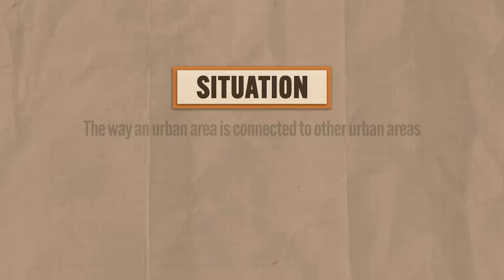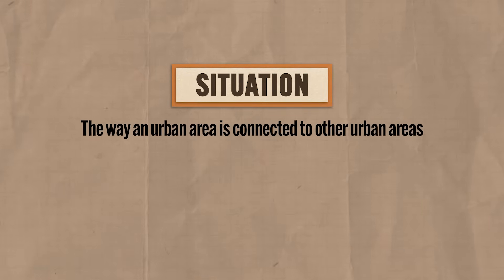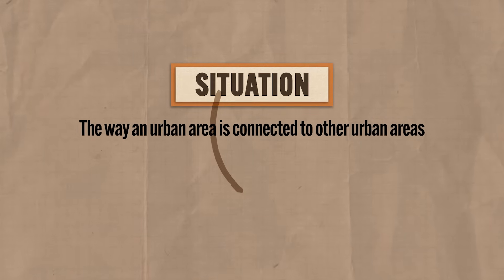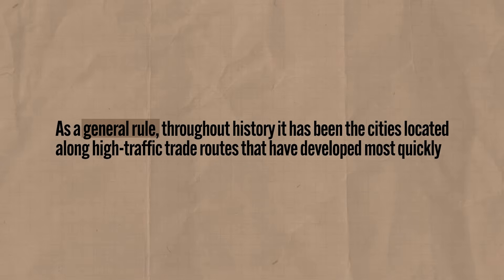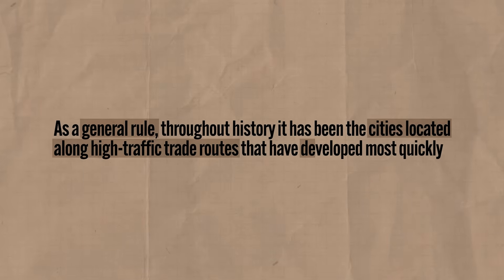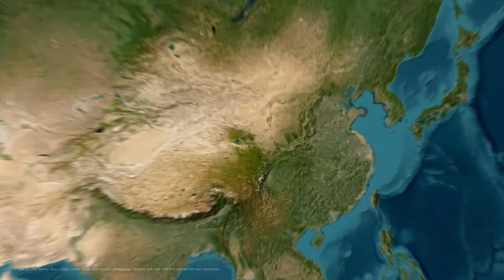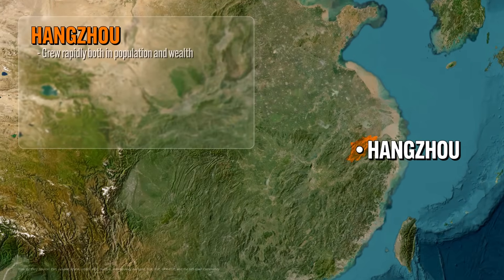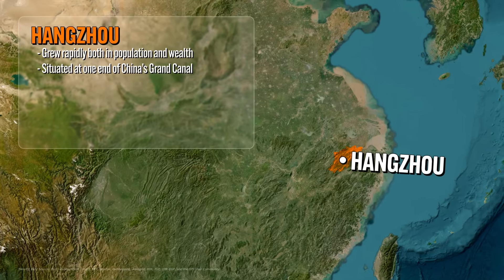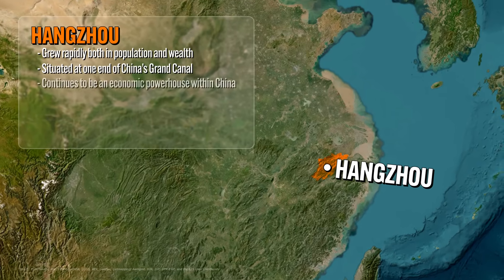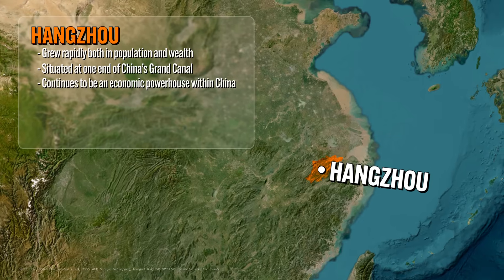Situation describes the way an urban area is connected to other urban areas — or reaching back to Unit 1, this is what we call relative location. A significant determining factor for the growth and longevity of any city is its relative location to other cities, especially through trade. Throughout history, cities located along high-traffic trade routes developed most quickly. For example, Hangzhou, China grew rapidly in population and wealth because it was situated at one end of China's Grand Canal, a major trading artery in that region, and continues to be an economic powerhouse to this day.